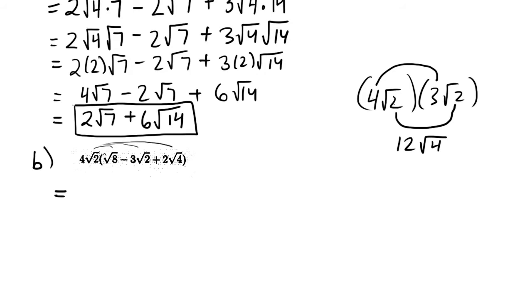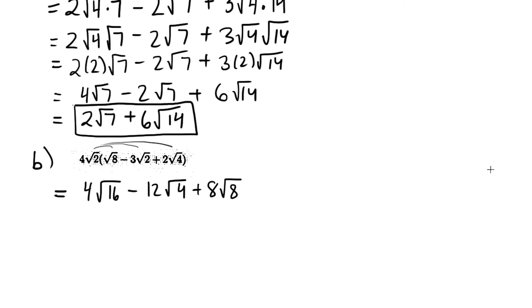When we have root 8 like this, it's really 1 root 8. So 4 root 2 times 1 root 8, what do we get? Well, 4 times 1 is 4, 2 times 8 is 16. 4 times negative 3 is negative 12, 2 times 2 is 4. 4 times 2 is 8, and 2 times 4 is 8. So that works out.